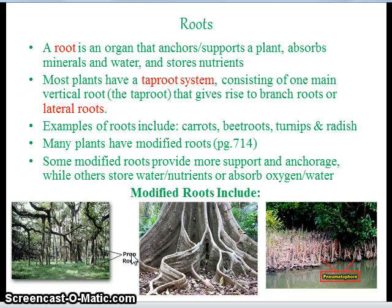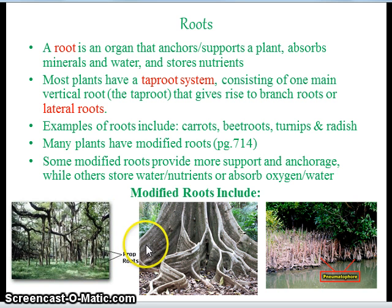Roots. A root is an organ that anchors or supports a plant, absorbs minerals and water, and stores nutrients. Most plants have a tap root system, consisting of one main vertical root — the tap root — that gives rise to branch roots or lateral roots. Examples of roots include carrots, beetroots, turnips, and radish. Many plants have evolved modified roots to provide more support in anchorage, store extra water and nutrients, or absorb oxygen and water.